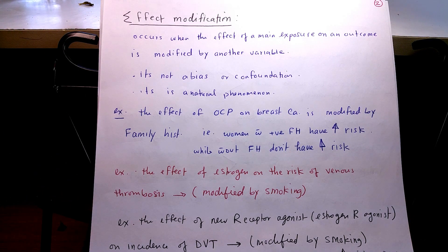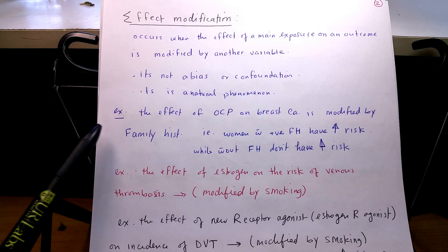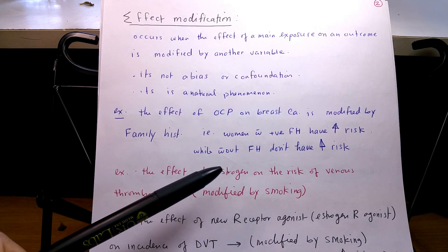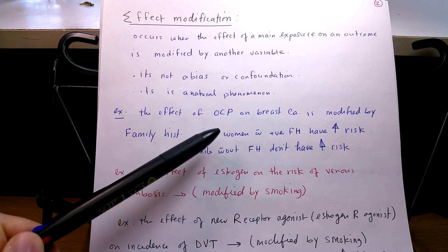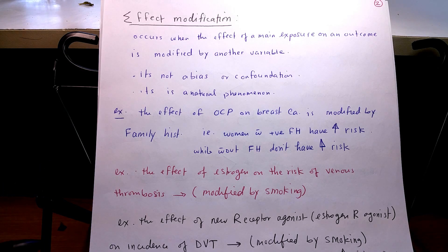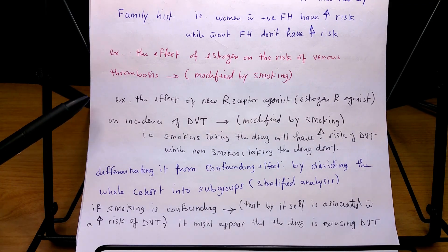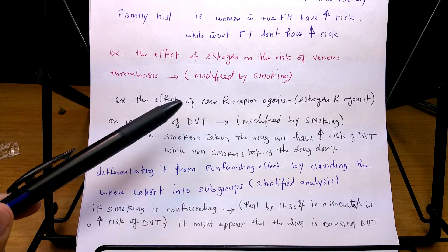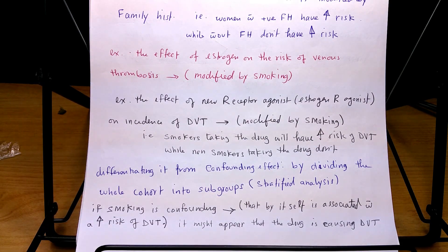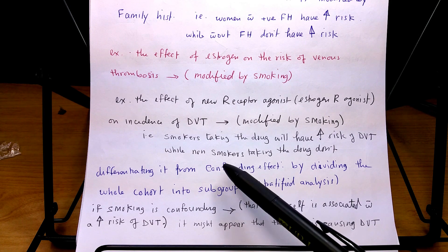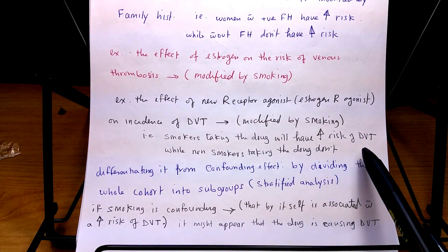Let's talk about an example: the effect of oral contraceptive pills on breast cancer. They found it is modified by family history — women with a positive family history have increased risk of breast cancer when taking OCP, while those without family history don't have increased risk. Another example: the effect of an estrogen receptor agonist on DVT incidence is modified by smoking status. Smokers taking the drug have increased risk of DVT, while non-smokers taking the same drug do not.